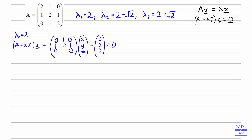So all we're left with from the first row is y equals 0. Looking at the second row, multiplying 1, 0, 1 by x, y, z gives us x plus z equals 0. And looking at the last row that will again give us y equals 0, which we already knew.